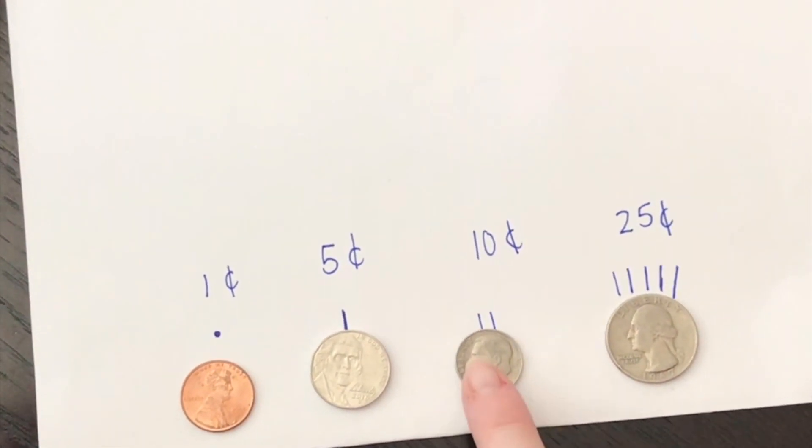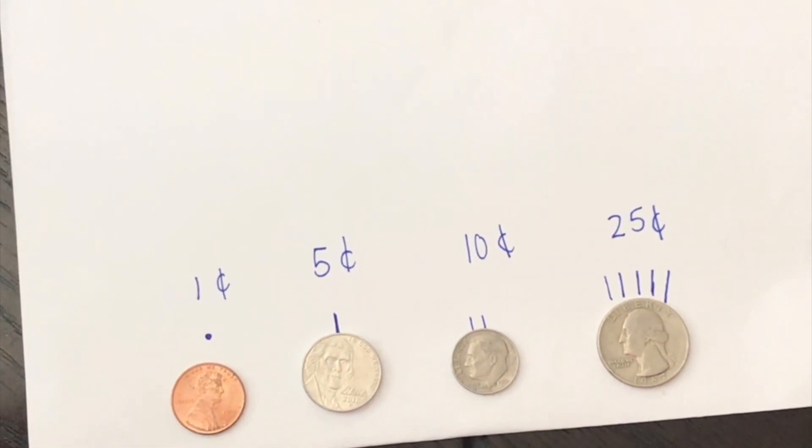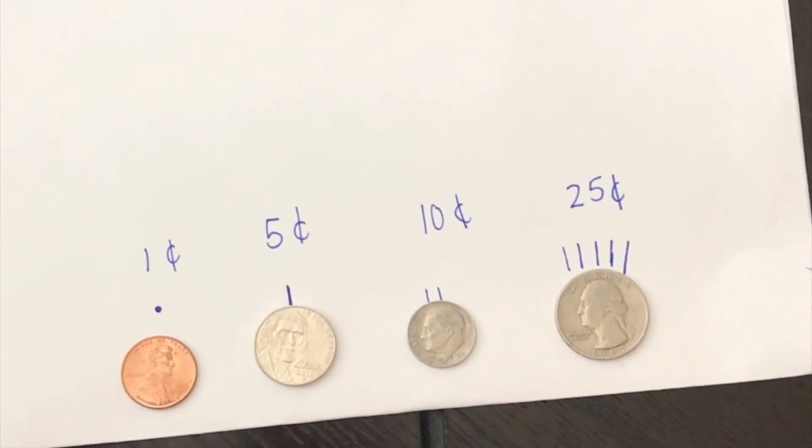Now let's look at our dime. Our dime has two hairs, so I can count by fives. Ready, go. Five, ten. Oh my goodness, our dime is worth ten cents.